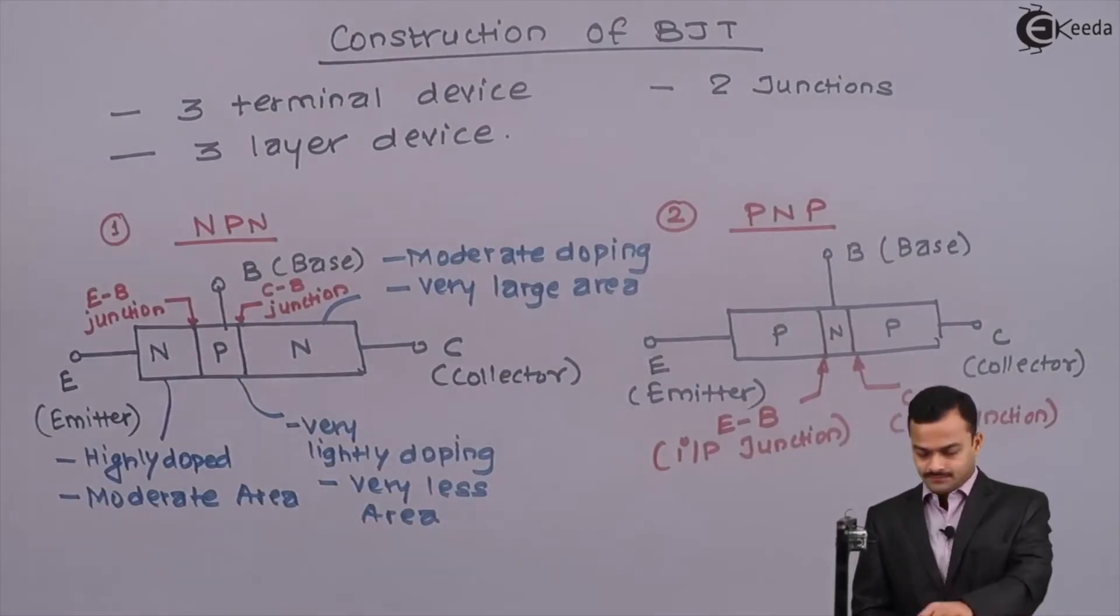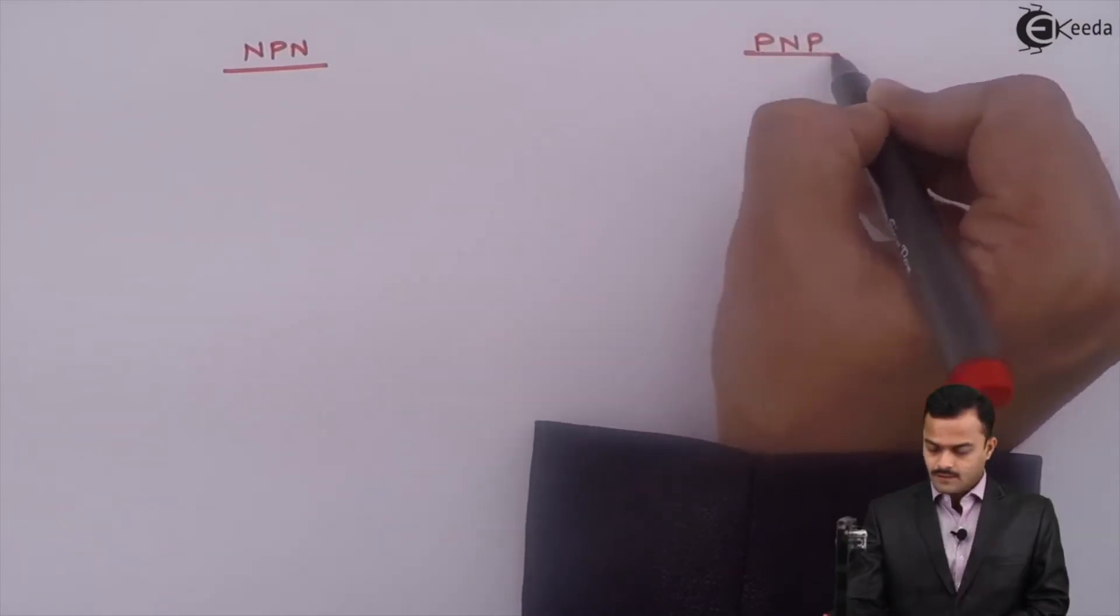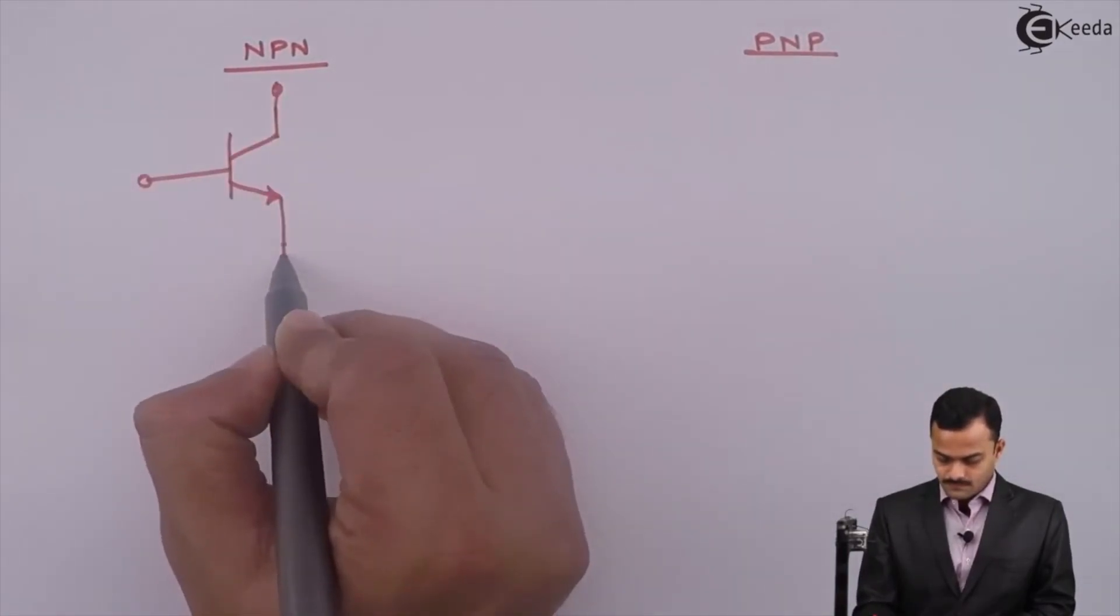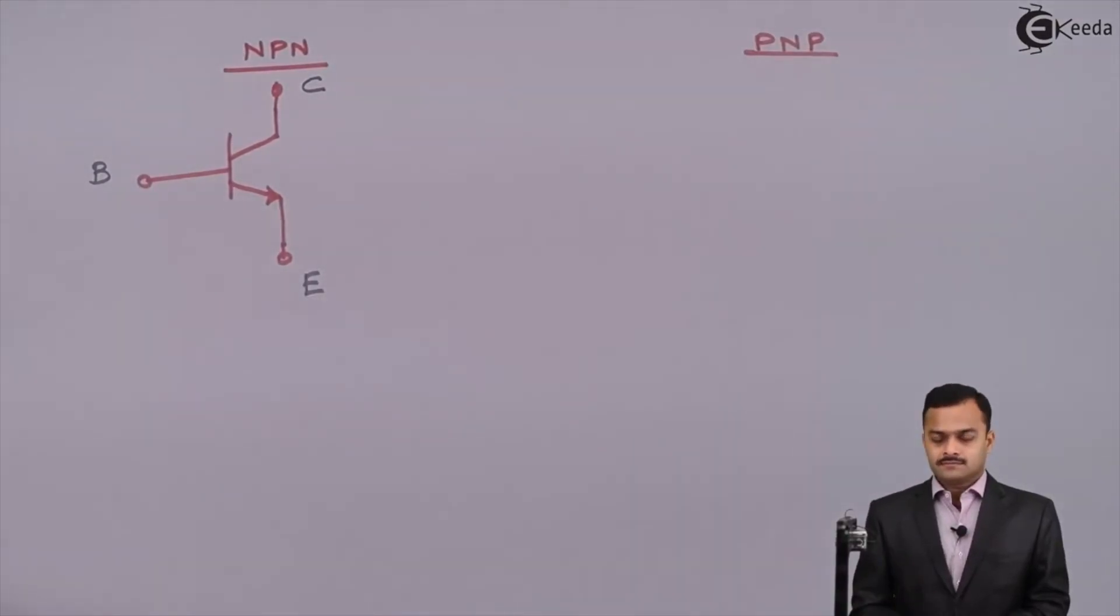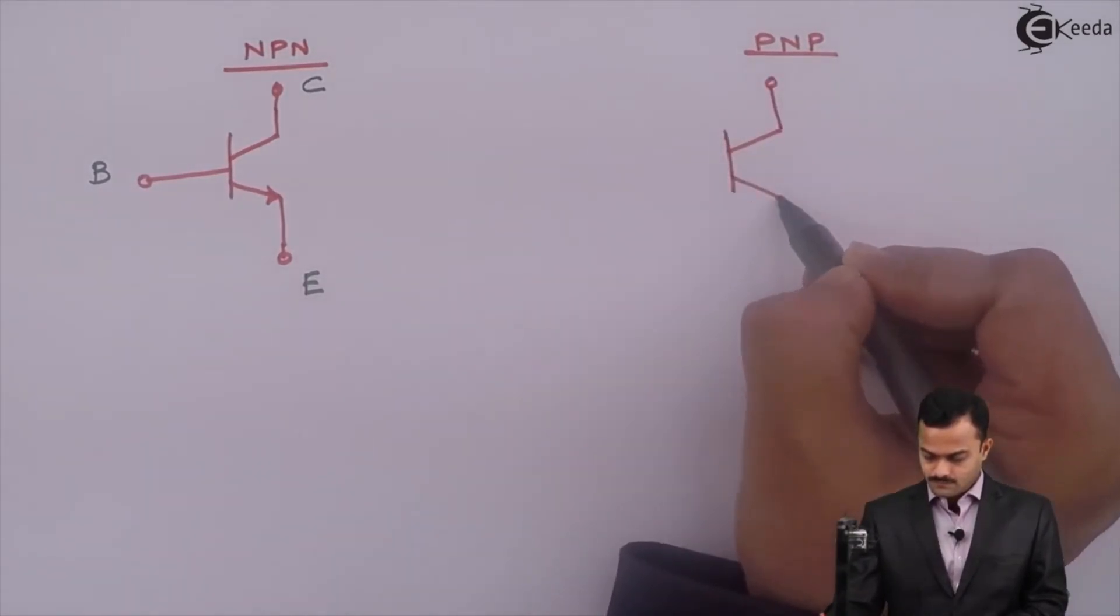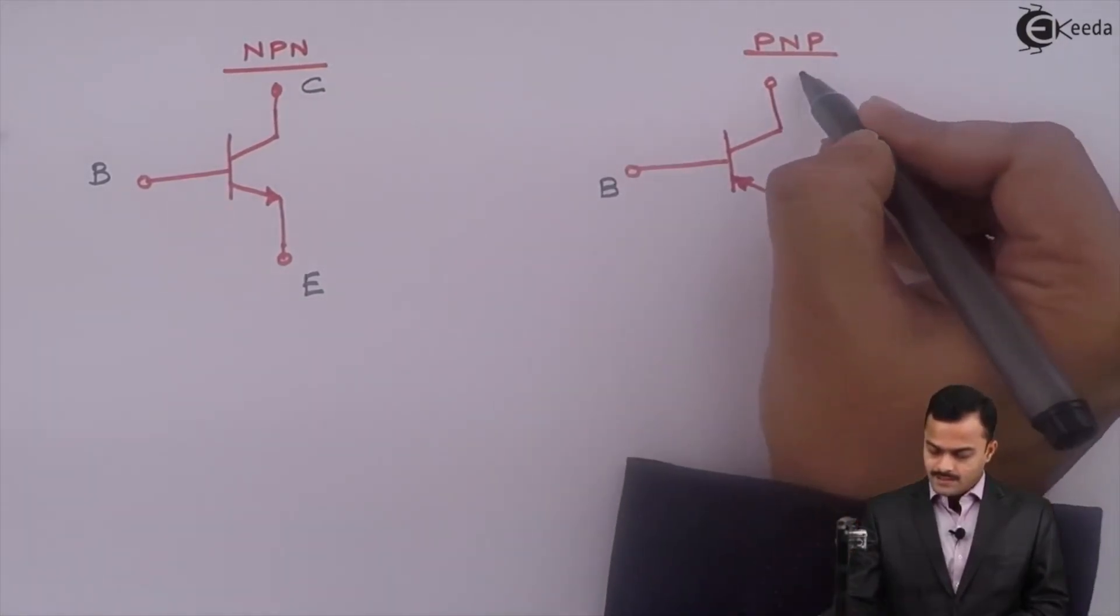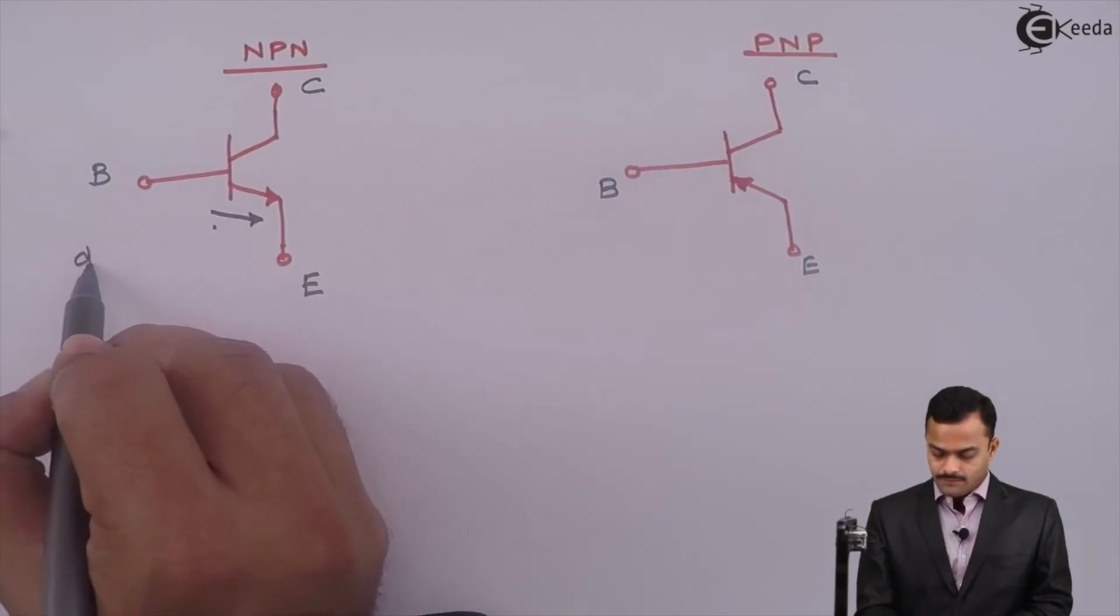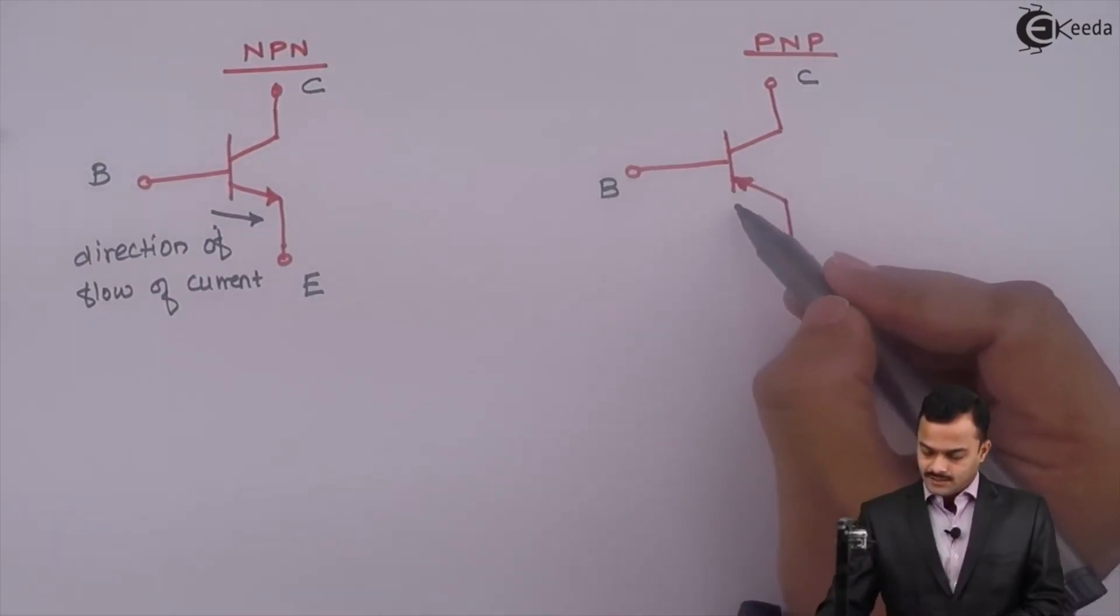Let us draw a symbol for it. NPN Transistor and here it is PNP. NPN Transistor is like this. It has three terminals out and those terminals are Collector, Base, Emitter. And for PNP Transistor, the transistor will be like this. Terminals are Emitter, Base, and Collector. What does this arrow represent? This arrow represents direction of flow of current. Similarly, over here, this will be the direction of flow of current.